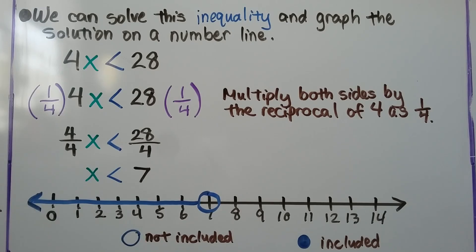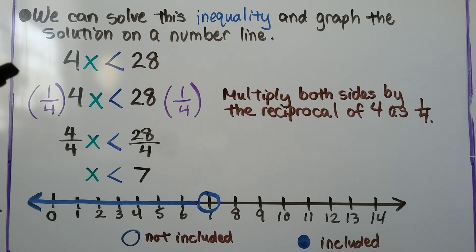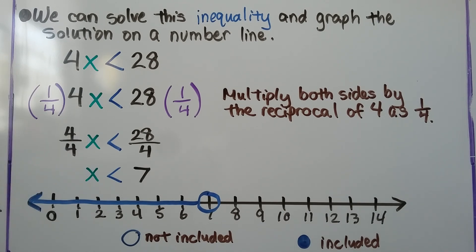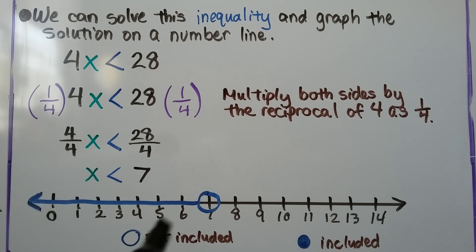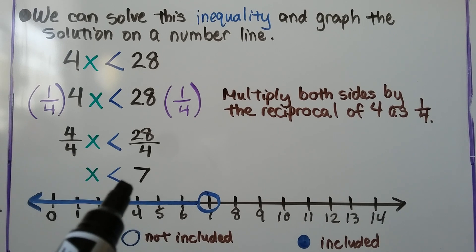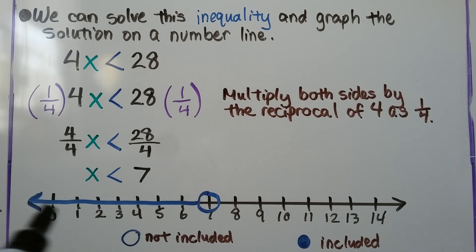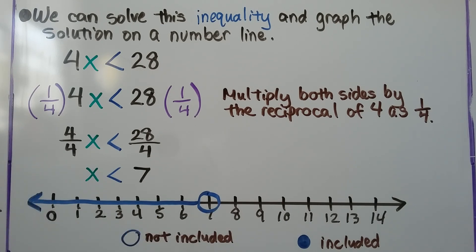We can solve this inequality and graph the solution on a number line. We have 4x is less than 28. We multiply both sides by the reciprocal of 4, which is one-fourth. We get 4/4 x is less than 28/4, which simplifies to x is less than 7. We graph it on our number line — the open circle means it's not included, so we put an open circle on 7 and draw our arrow pointing to numbers smaller than 7.